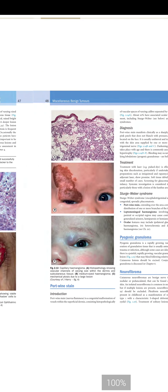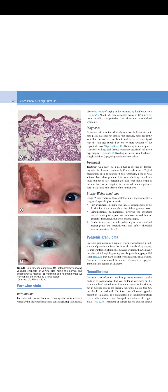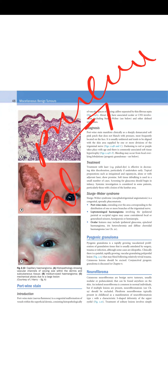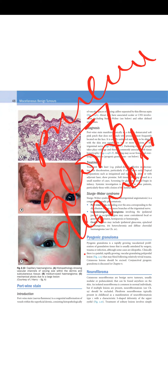Next is port wine stain, which is a pinkish discoloration of the skin along the dermatome of the trigeminal nerve — the fifth cranial nerve. Unlike capillary hemangioma, it does not blanch on pressure. One of the most common systemic associations is Sturge-Weber syndrome.